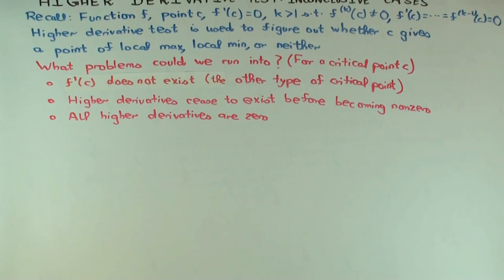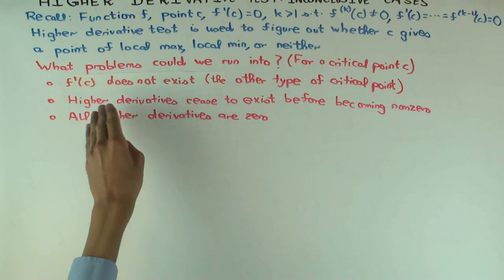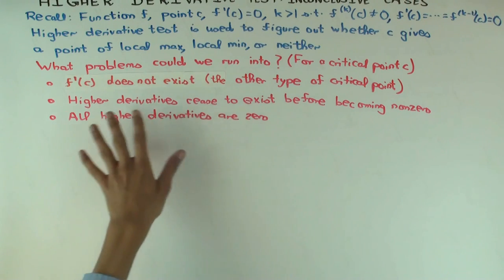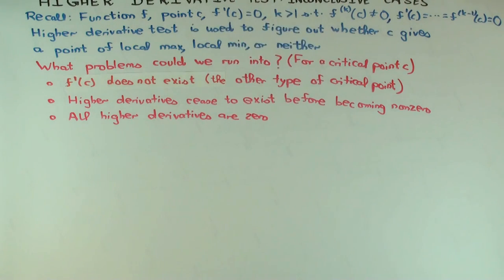Is there any other type of problem you could have? Well, no. If the first derivative exists, the higher derivatives continue existing, so they never stop existing, and they're not all zero, you will have this situation sometime, right? So this is a comprehensive list of the problems.